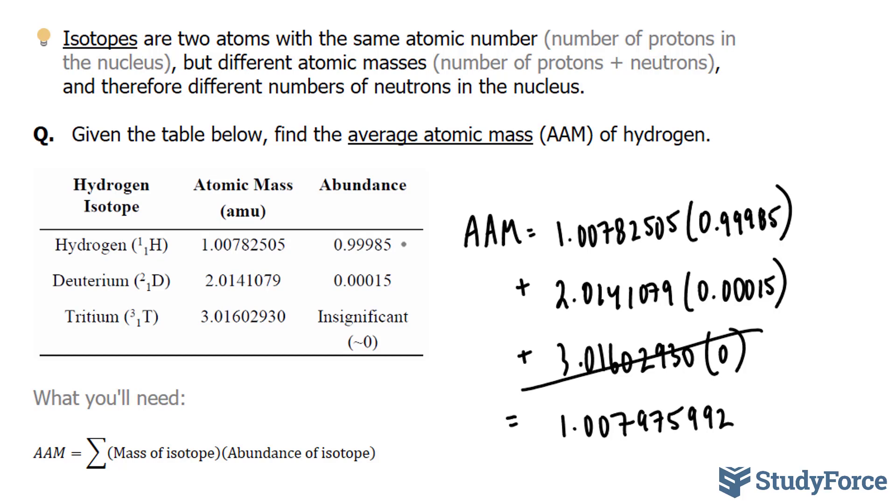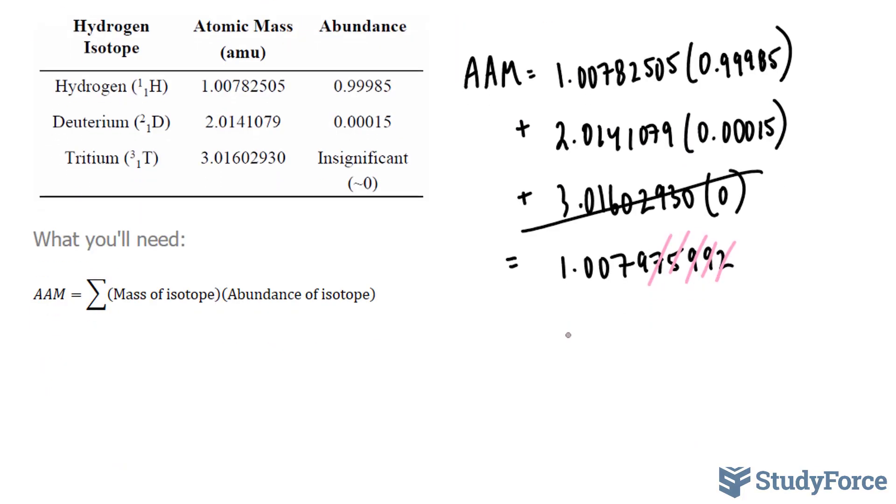Now, if it goes to five significant figures, everything after this 9 will be truncated. Since the 7 is greater than 5, this will go up by 1, and we end up with 1.0080. This number goes up by 1, therefore this becomes 80. And this right here represents the average atomic mass for hydrogen.